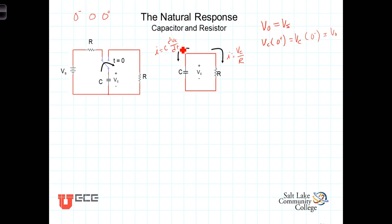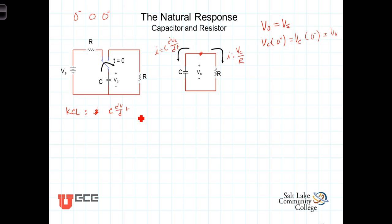What we're going to do is write an equation involving these by summing the currents leaving this node, then solve for the voltage across the capacitor as a function of time. KCL at the node tells us that the current leaving the node through the capacitor is C·dV/dt plus the current leaving the node through the resistor, which is V sub C divided by R, and the sum of those two currents equals zero.